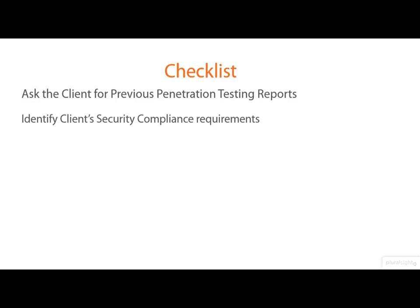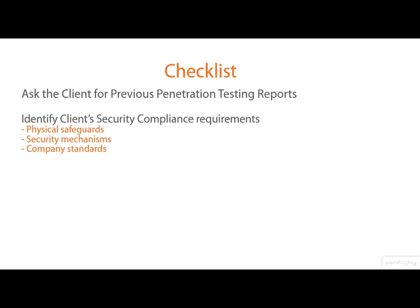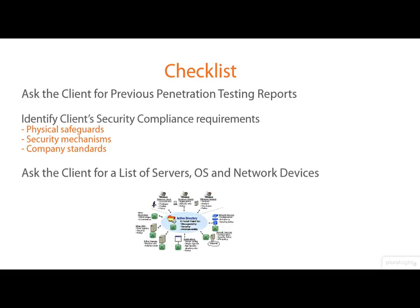Your clients are different — a bank business is not like an e-commerce business. Banks have more restricted regulations that you should take into consideration. What you should be looking for: every company should maintain physical safeguards such as providing security through access cards and having guards on duty. They should also have technical security mechanisms and company standards. Next, ask the client for a list of servers, operating systems, and network devices.